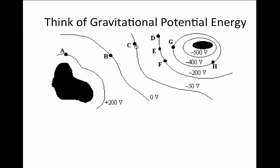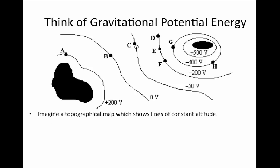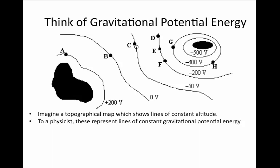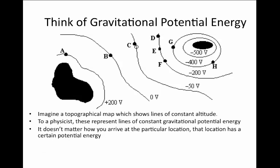It's helpful in thinking about voltage to think about gravitational potential energy. Imagine a topographical map which shows lines of constant altitude — mountains and valleys depicted on such a map. To a physicist, those lines don't represent just altitude; they represent lines of constant gravitational potential energy. If you lift up to a certain height, you're at a certain gravitational potential energy relative to somewhere further down. It doesn't really matter how you arrive at a particular location — whether you flew in from above or tunneled in from below — that location has a certain amount of potential energy.